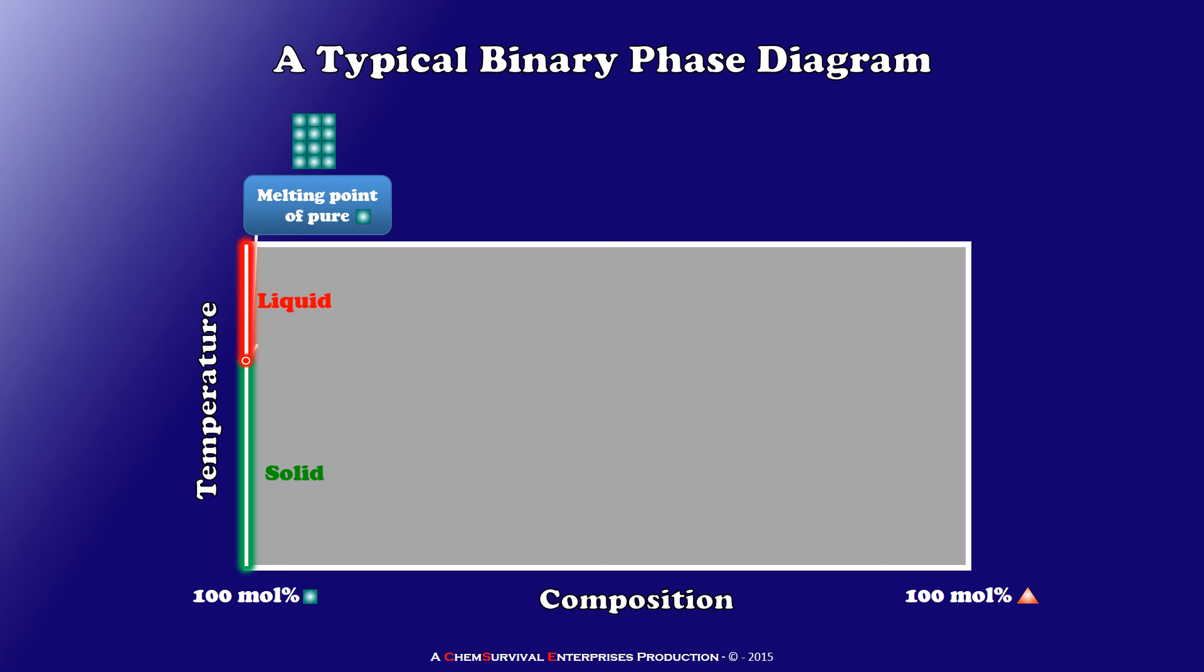But if I begin to mix in a small amount of a second compound, for example my compound which is depicted by red triangles here, I see two important changes in the phase boundary. The first is that it goes downward. The melting point goes down when I add small amounts of my new compound to the mixture. And the second interesting characteristic is that it does not melt at a single temperature anymore, but rather over a range of temperatures.